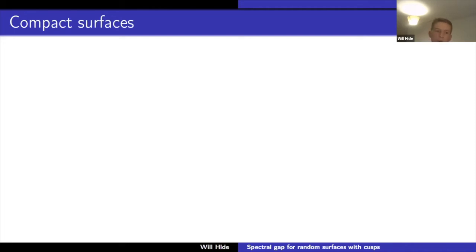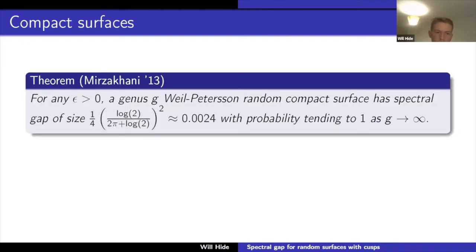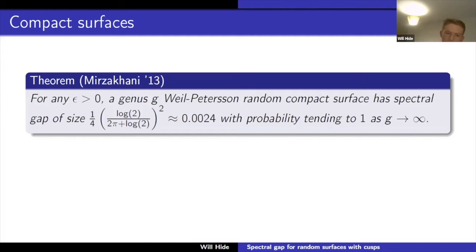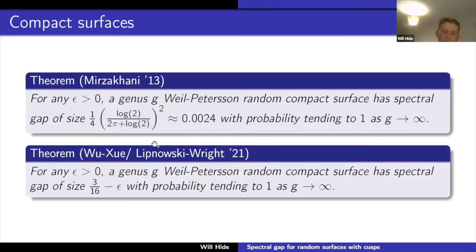I would like to discuss some results on compact surfaces first. Mirzakhani proved the first explicit uniform spectral gap result, showing that for any epsilon > 0, a genus-g Weil-Petersson random compact surface has a spectral gap of size approximately 0.024 with probability tending to one as g tends to infinity. Very recently, independently, Wu and Zhu and Lipnowski and Wright proved that for any epsilon > 0, a genus-g Weil-Petersson random compact surface has a spectral gap of size 3/16 minus epsilon with probability tending to one as g tends to infinity.